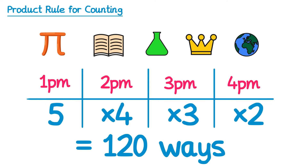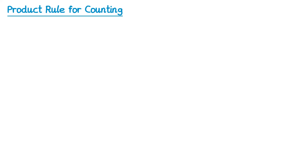So if the question does or doesn't have repetition, that can affect the answer. You need to watch out for the wording of the question in particular. It's very common for exam questions to be about numbers, so let's have a look at some of those examples.